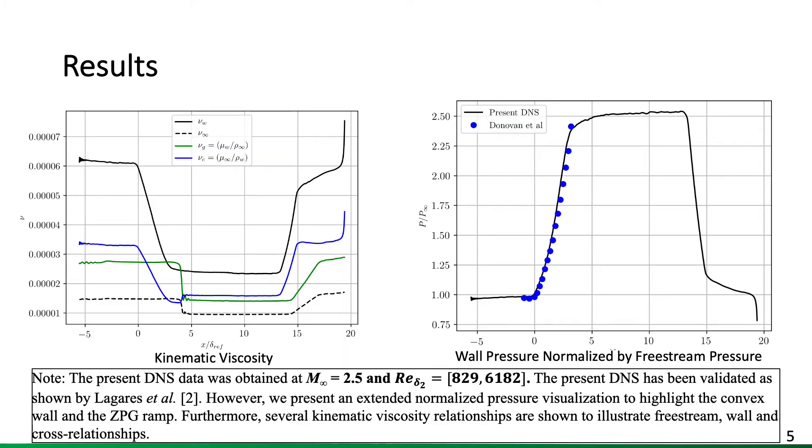Now to discuss some high-level validation results. Towards the left, you see the evolution of the kinematic viscosity using various definitions throughout the domain, just to highlight both near wall and freestream effects on the kinematic viscosity. Now towards the right, you see the normalized wall pressure throughout the domain with experimental points by Donovan and others, which I already alluded to at the beginning was the inspiration for the domain of the current study.